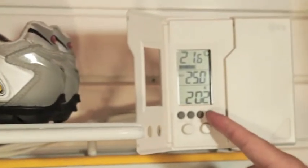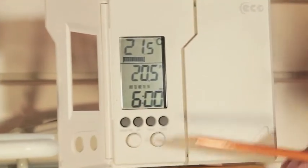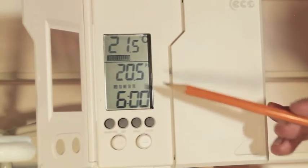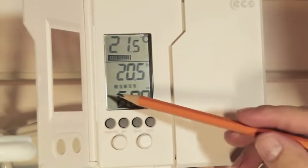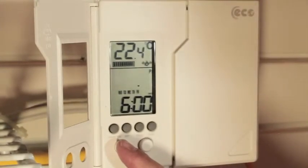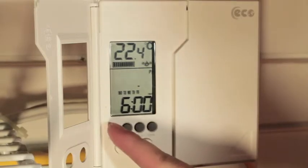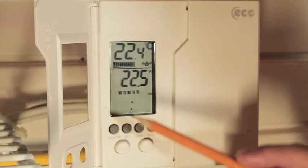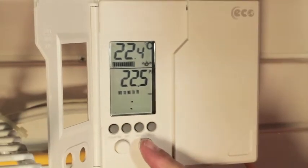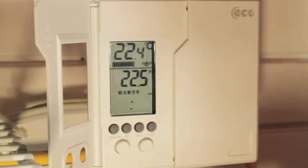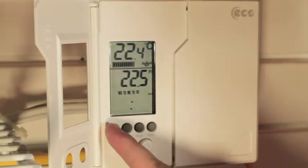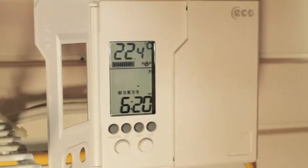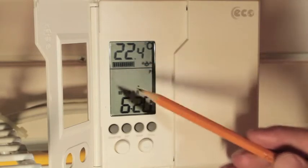To begin entering the program to the thermostat, press PROG once. The symbol for program one will appear on screen as well as all the letters for the days of the week. To adjust the temperature of program one, you can now press the arrow buttons. To switch to adjusting the time, press the usage time button. The time will now flash. This can now be adjusted by pressing the arrow buttons. To switch between the temperature and time, press the usage button.